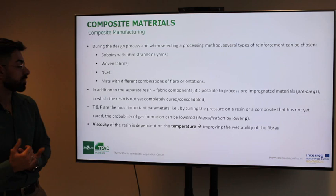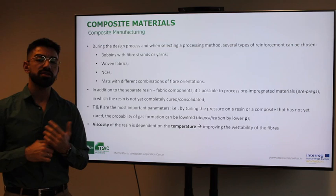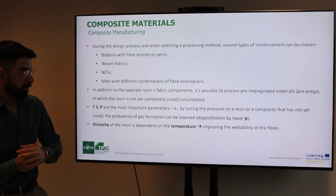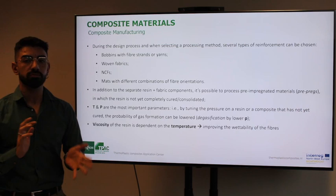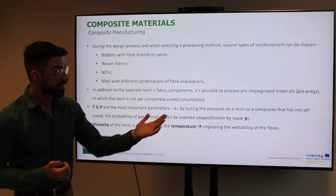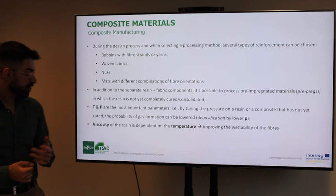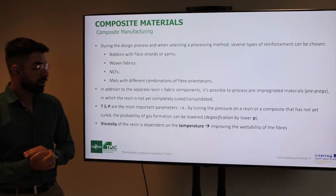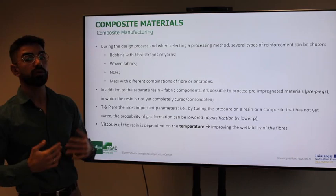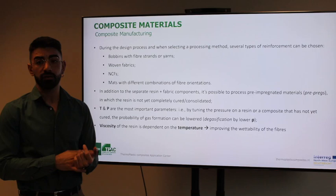The most important parameters when processing composite materials are temperature and pressure. By tuning the pressure of an uncured resin composite, you can lower the probability of gas formation — an example of degasification by lowering pressure. The viscosity can also be tuned and is strictly dependent on temperature. Lower viscosity improves the wettability of the fibers, which is important for the final properties of the composite and for stress transfer.